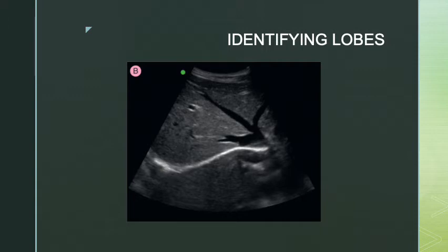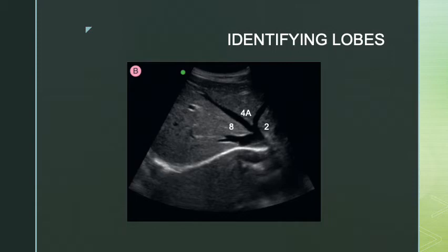You can see the middle hepatic vein, the right hepatic vein, and the left hepatic vein. The middle hepatic vein lies in the main lobar fissure, which divides the left medial lobe and the right anterior lobe. With our image orientation showing right, left, anterior, posterior — we have segment two (superior lateral), segment four A (superior medial), segment eight (anterior superior), and segment seven (posterior superior).